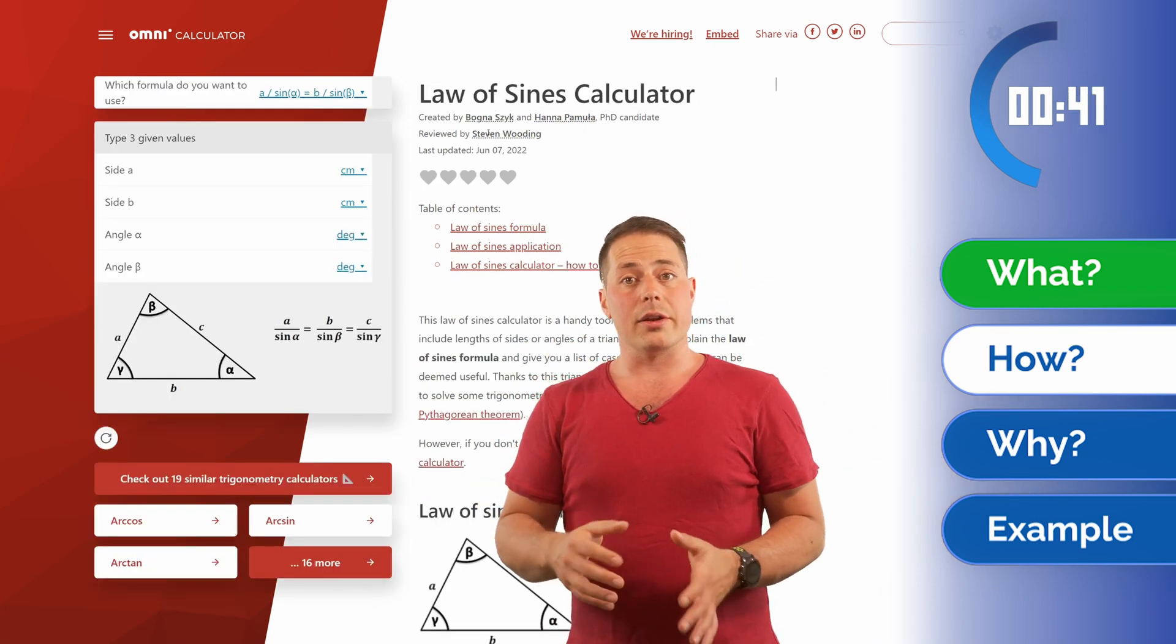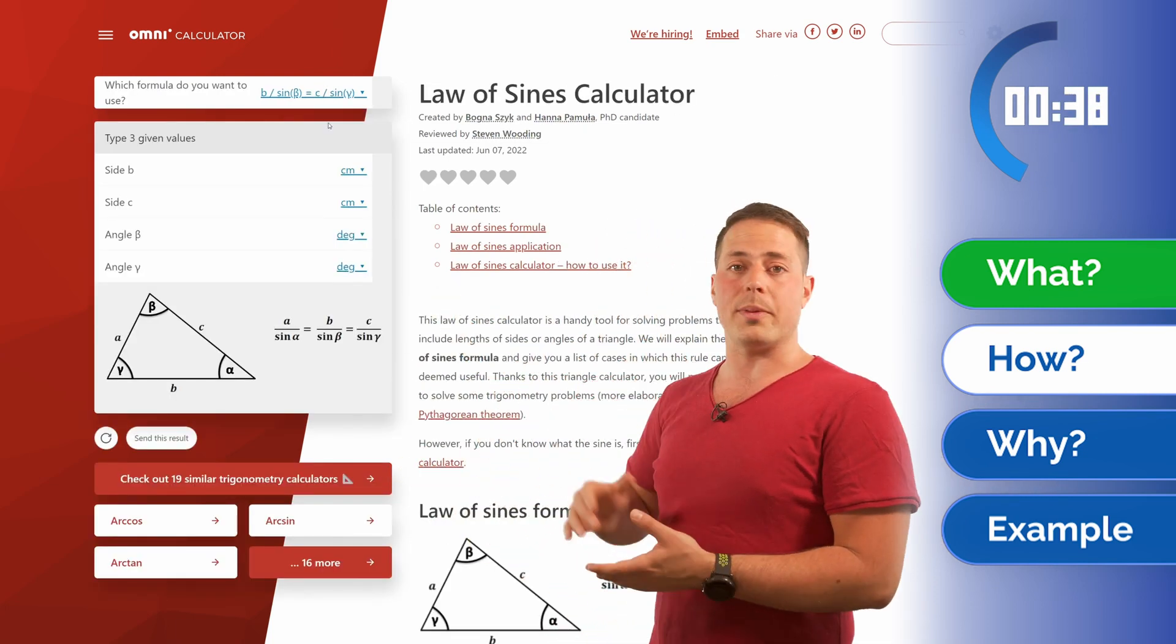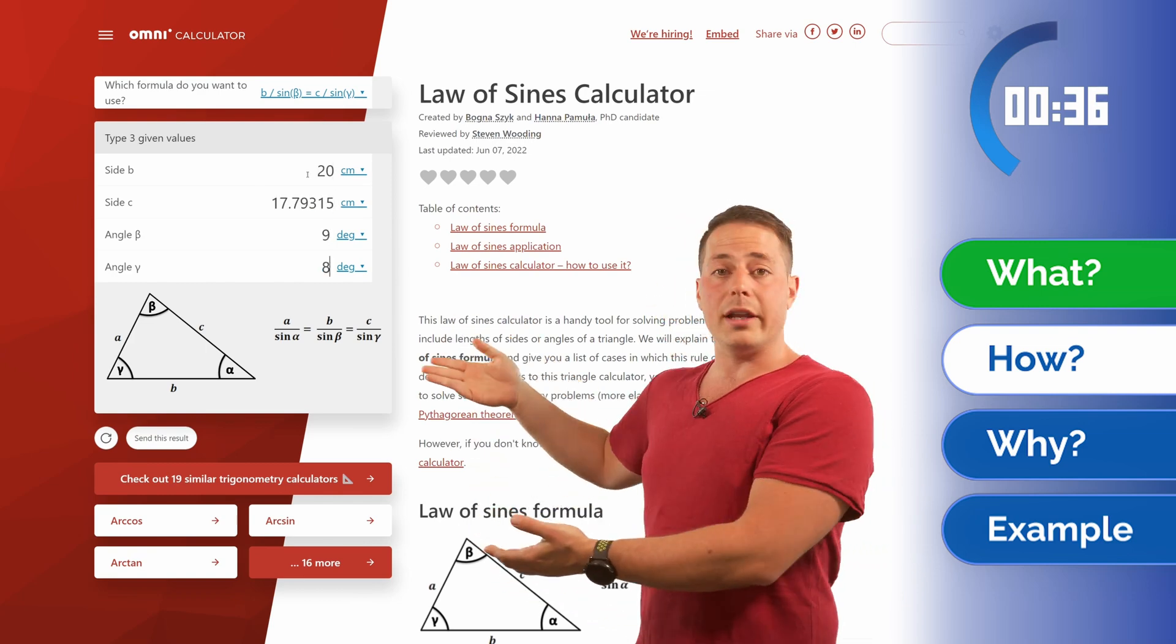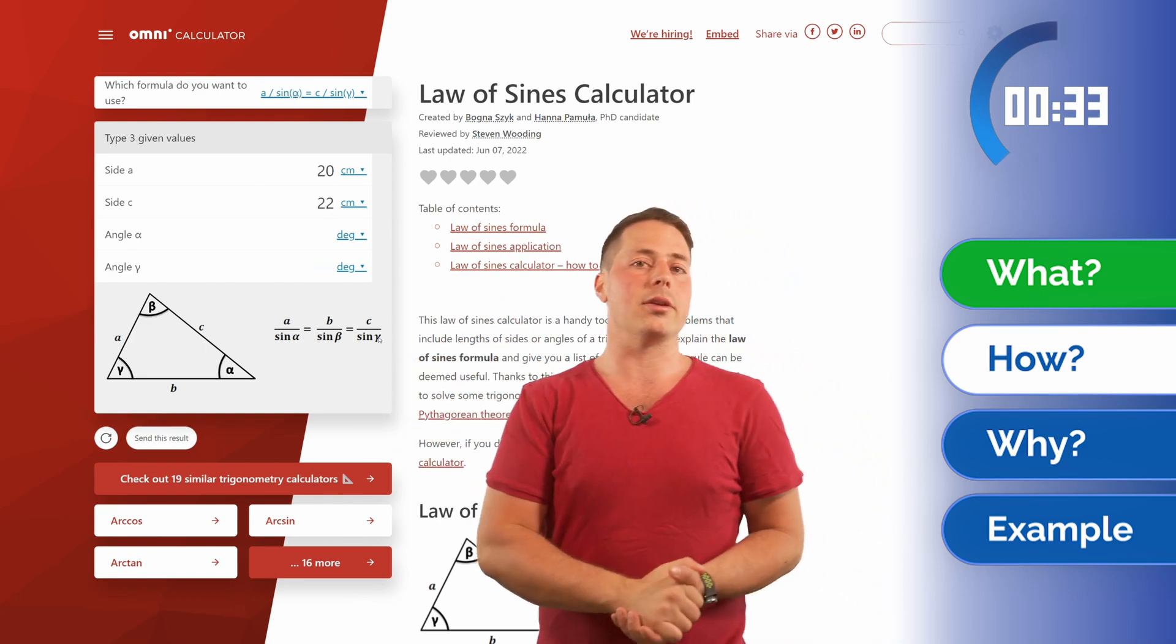The law of sines calculator is slightly more involved, but still super simple. You select which pairs you want to talk about, and then fill in three of the four blanks. No matter which ones, the fourth will always be calculated for you.